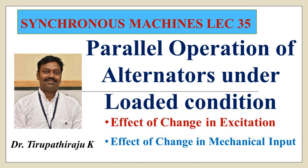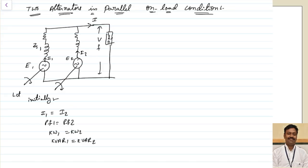Good morning all. Today we are going to discuss how two alternators behave when connected in parallel on load conditions. Let us assume initially there are two generators connected to the load, and both alternators are supplying equal load: I1 equals I2, power factor 1 equals power factor 2, and the active and reactive power are equally shared among them.